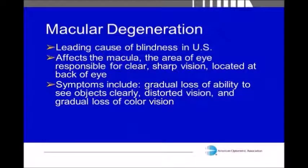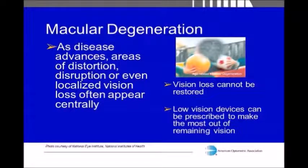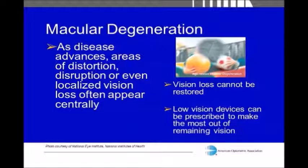Our final topic is macular degeneration, another leading cause of blindness in America. It results from changes to the macula, which is a portion of the retina responsible for clear and sharp central vision. Common symptoms include gradual loss of ability to see objects clearly, distortion in central vision, gradual loss of color vision, and a dark or empty appearance in central vision. Unlike glaucoma which affects peripheral vision, macular degeneration affects the central vision most, so people often notice it sooner, but it still needs to be monitored and treated closely.